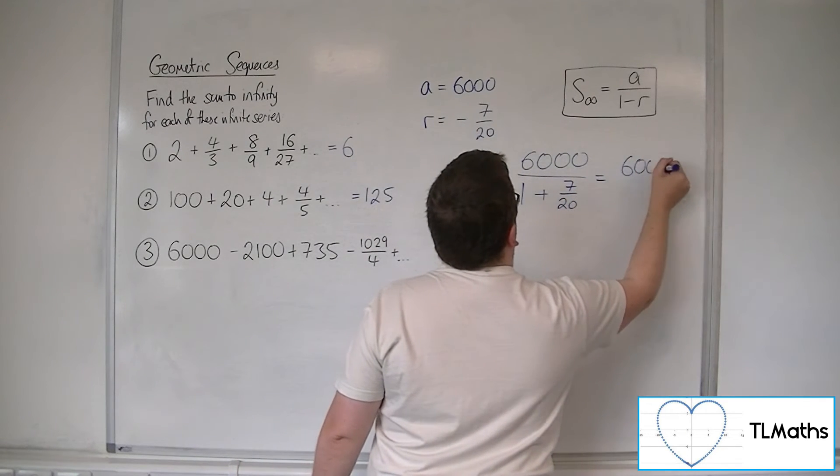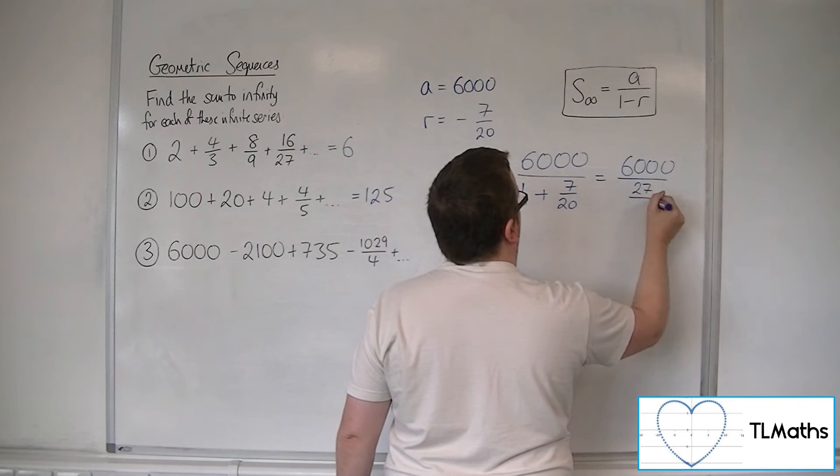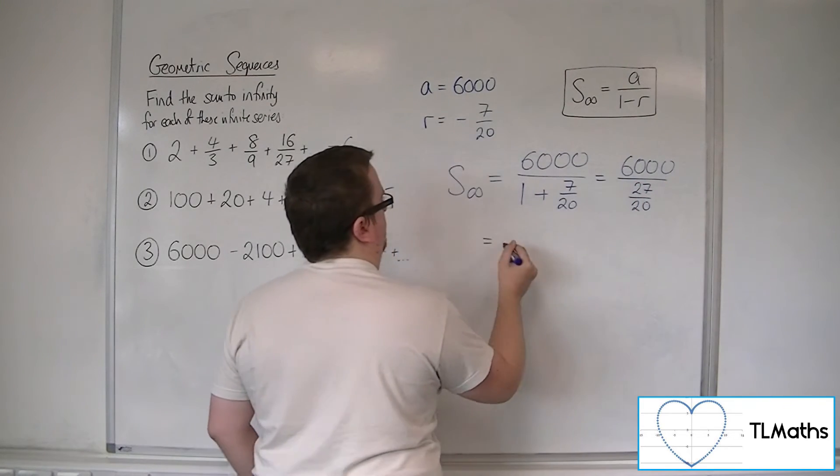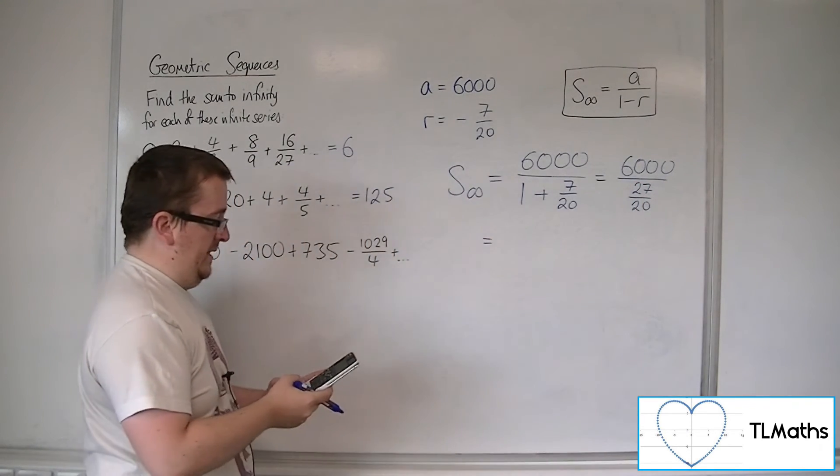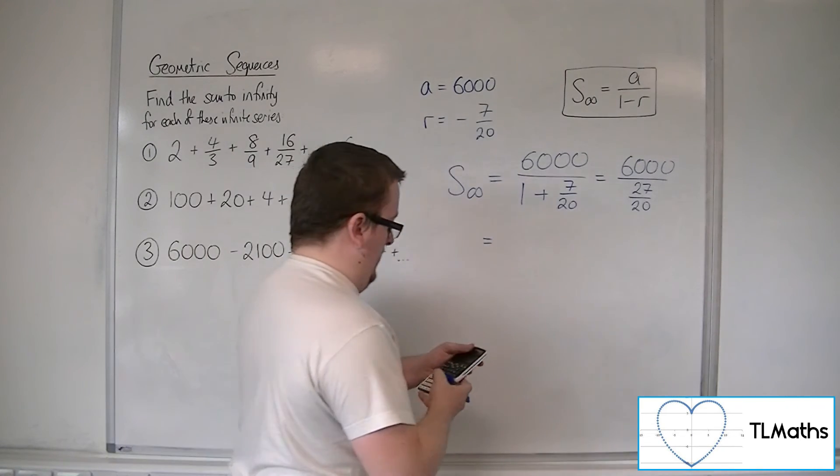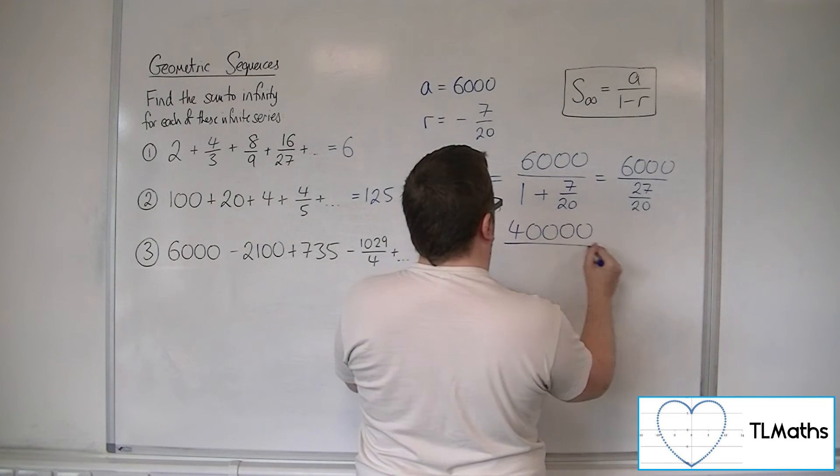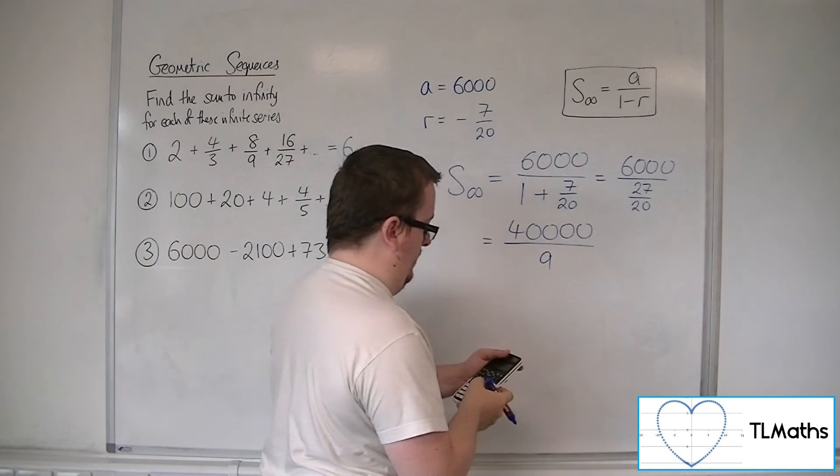So that's 6,000 over 27 twentieths, so 6,000 divided by 27 twentieths, which is 40,000 ninths.